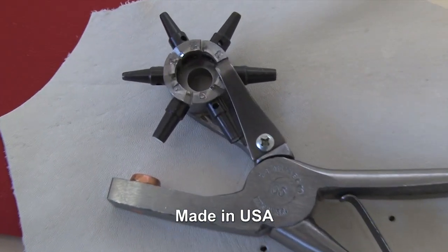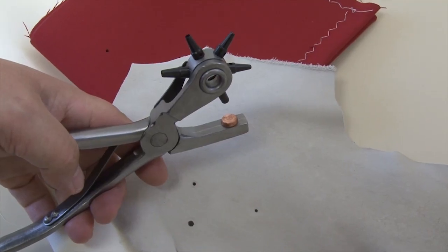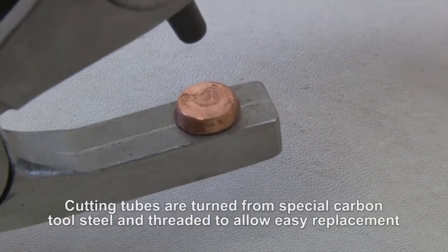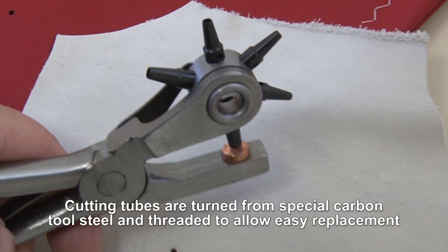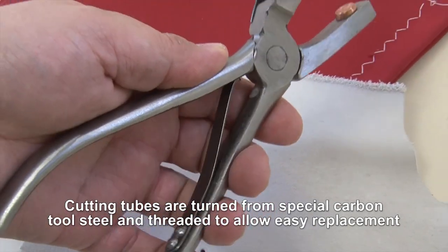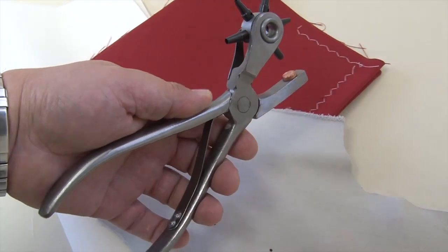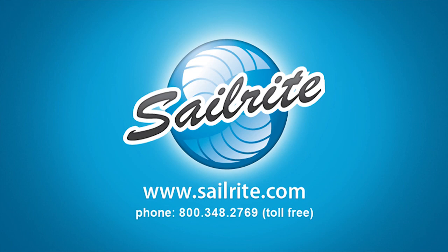The tool's body is made from a forged steel which is finely polished. The 6 cutting heads are tempered cutting tubes made from a special carbon tool steel. The distance from the cutting tube to the back of the jaw is 1½ inches.